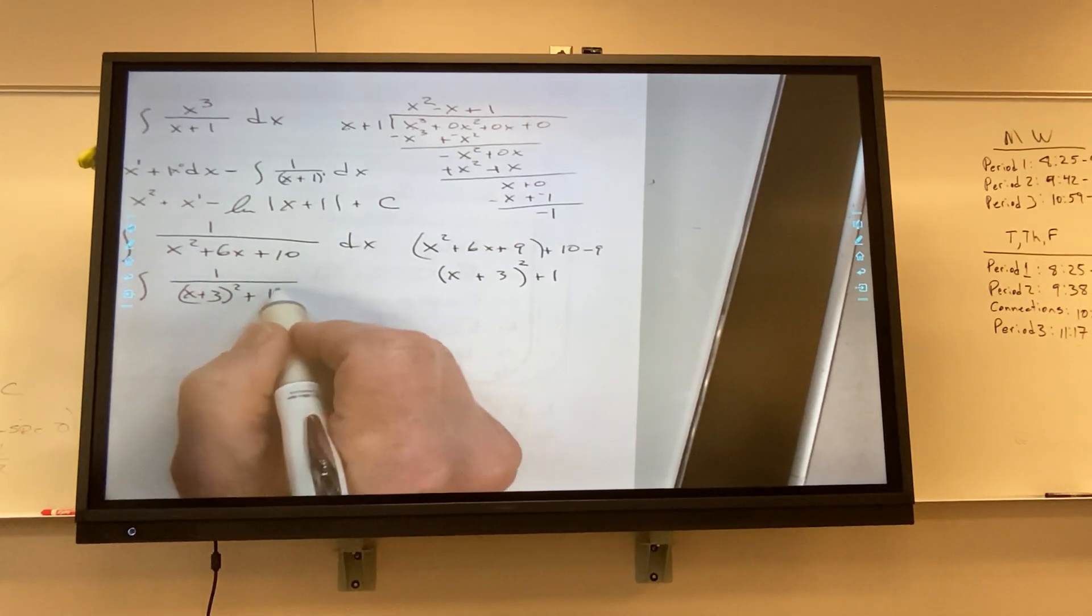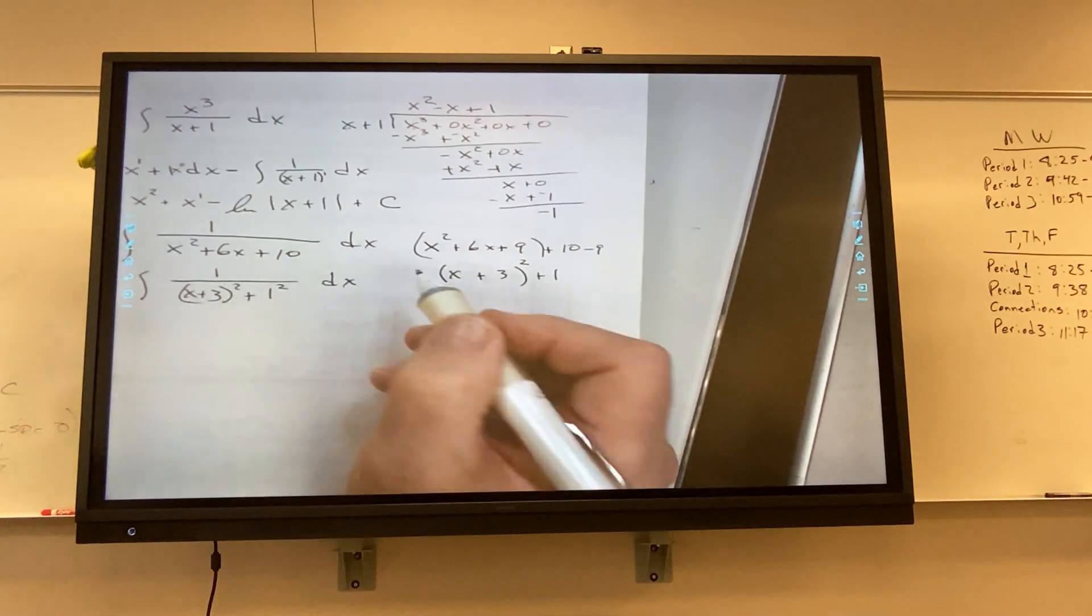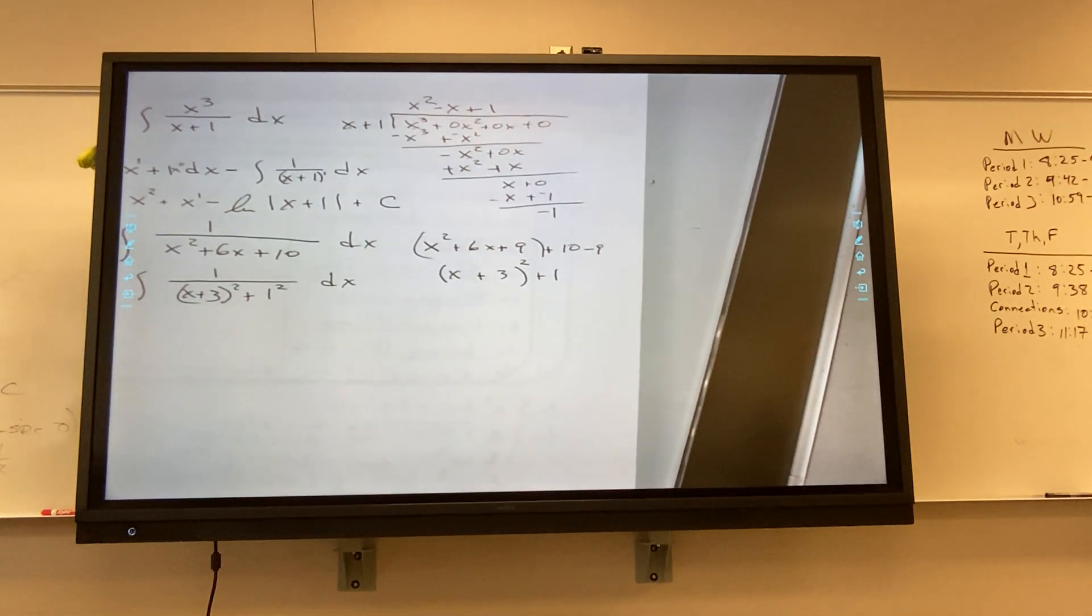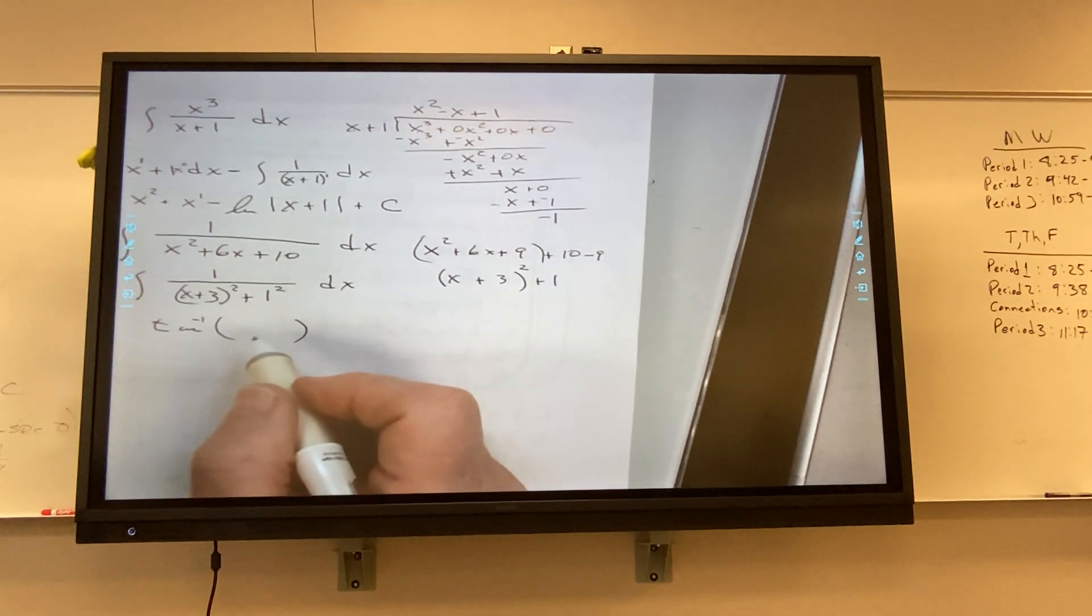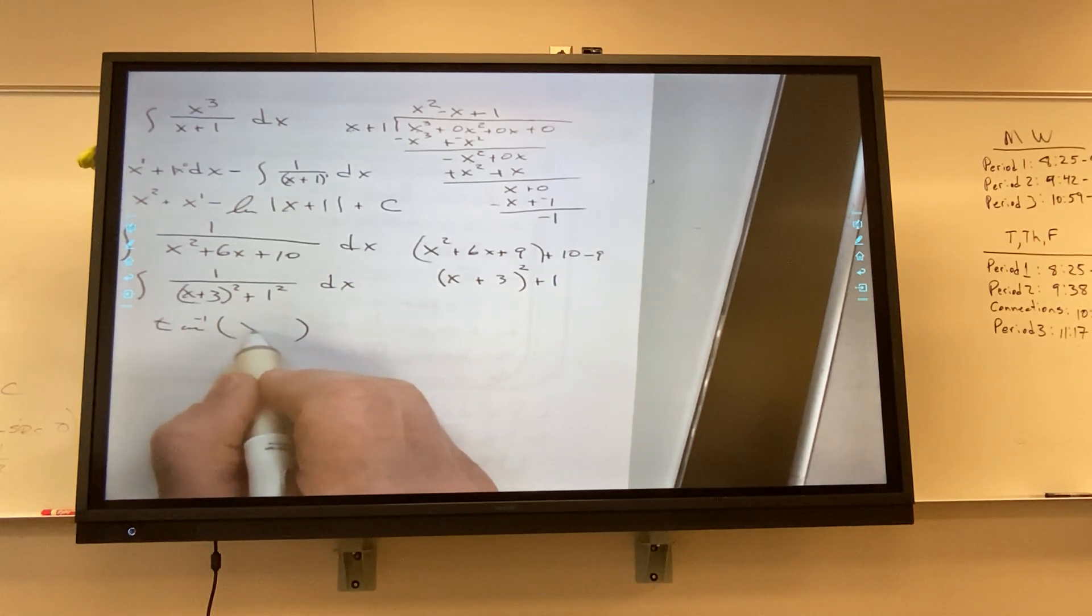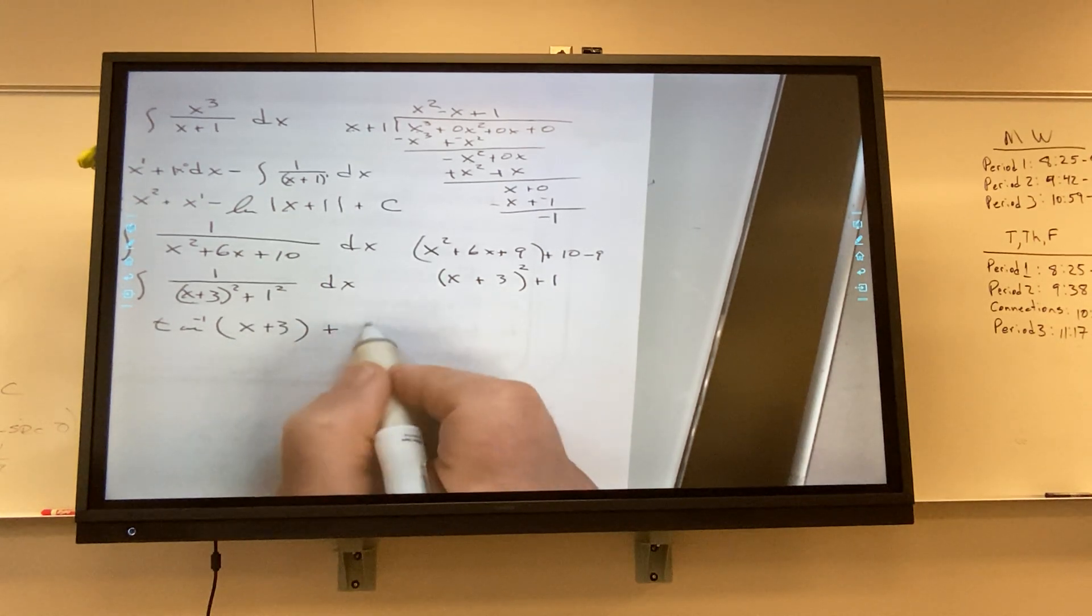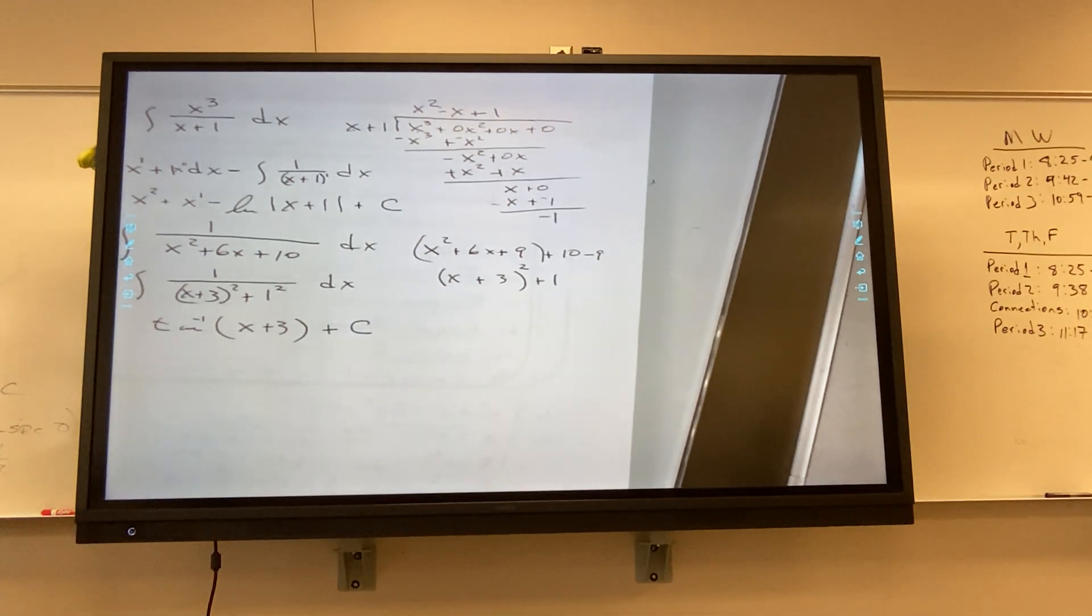So then I come back to my integral, I write one, I write x plus three squared plus one. And one is one squared, correct. So that's my a, so it's not doing anything because one doesn't do anything, right. So is the derivative of x plus three one? Yeah, it is. So it's tangent inverse of what? X plus three. Yeah, you could say x plus three over one but that's just x plus three, plus C. Now we're done.